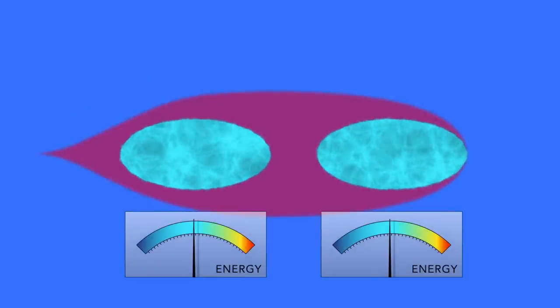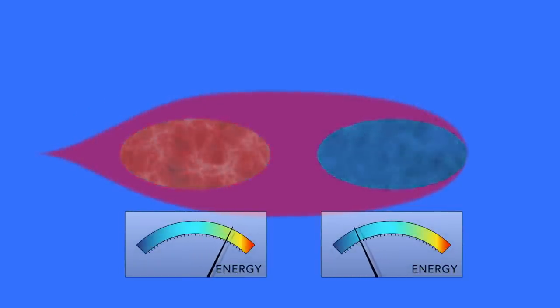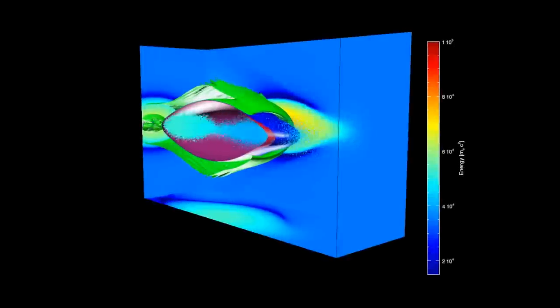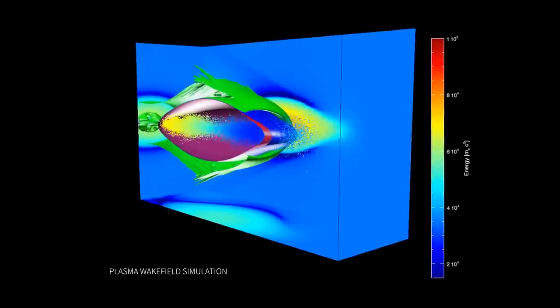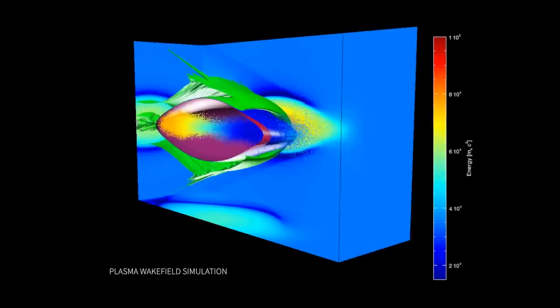The positive charge of those atoms left behind then pulls the plasma electrons back in toward the axis. The second bunch of electrons traveling behind the drive bunch is inside of this wake structure, and it experiences the strong electric fields that then allow it to gain a lot of energy in a very short amount of space.